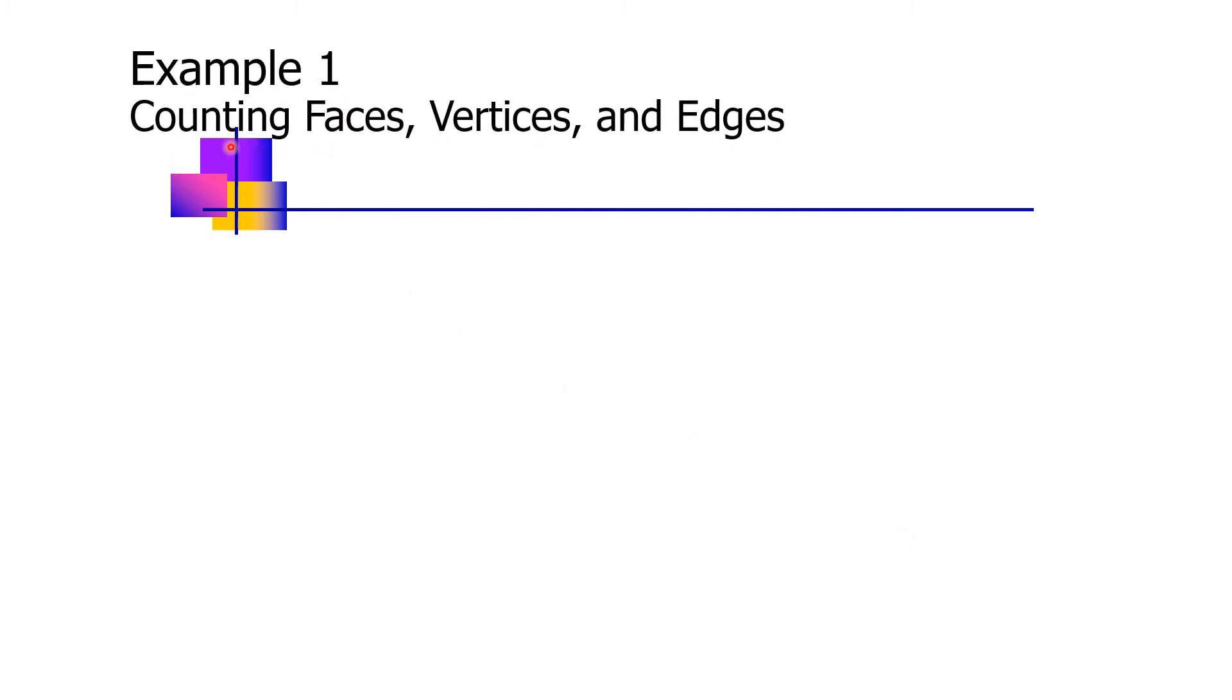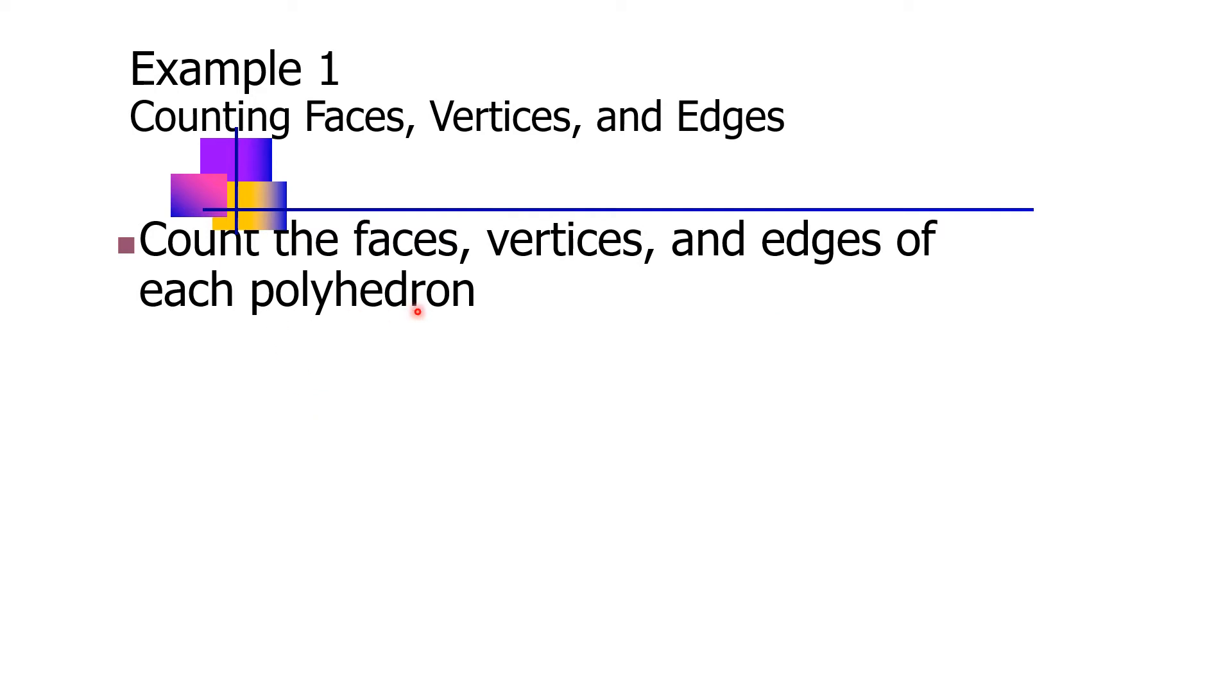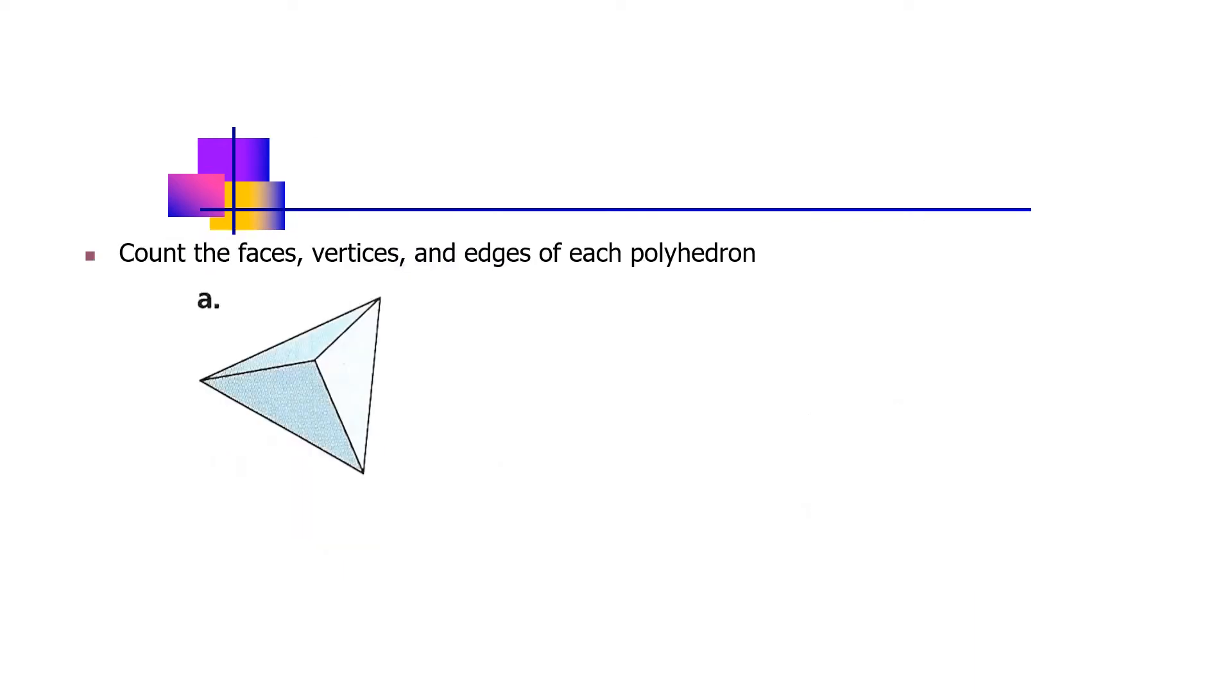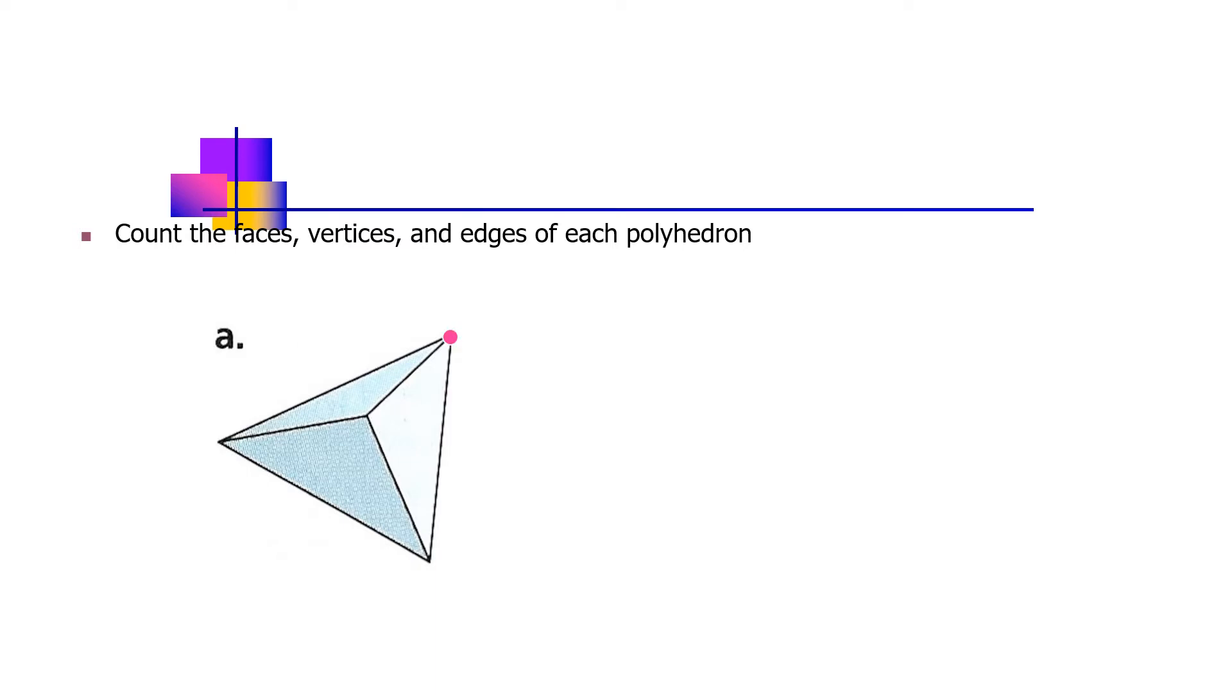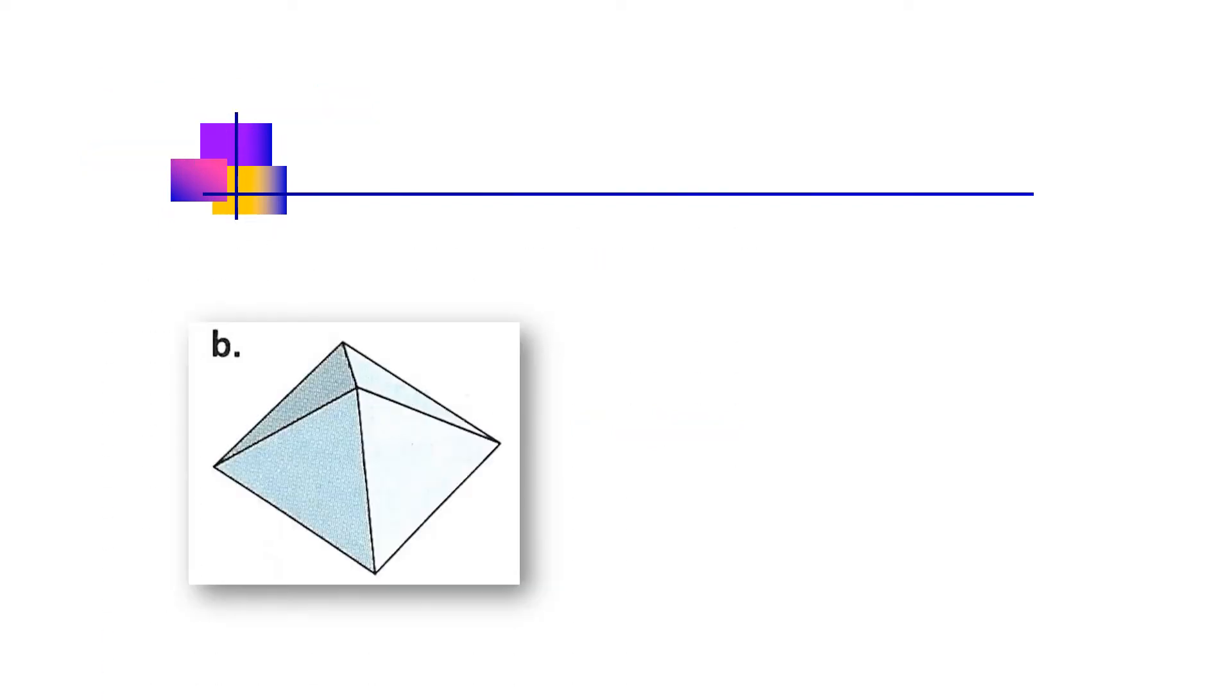Example one: counting faces, vertices, and edges. Let's count the faces, vertices, and edges of each polyhedron. For letter A, let's count: one, two, three, four. There are four faces. Next, let's count the vertices: one, two, three, four. There are four vertices. And then let's count the edges: one, two, three, four, five, six.